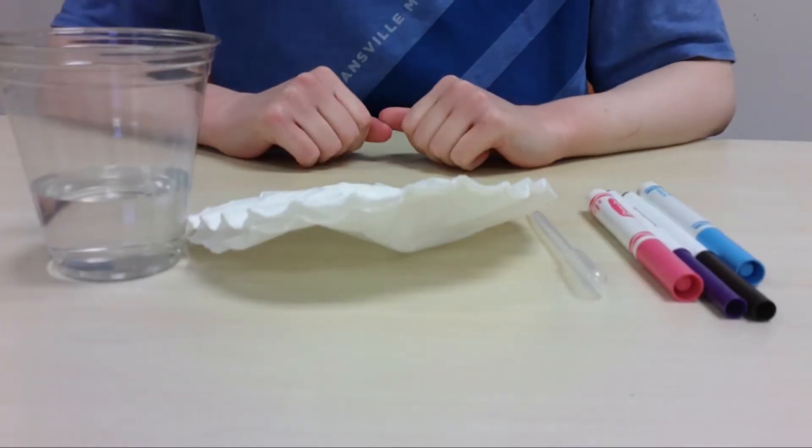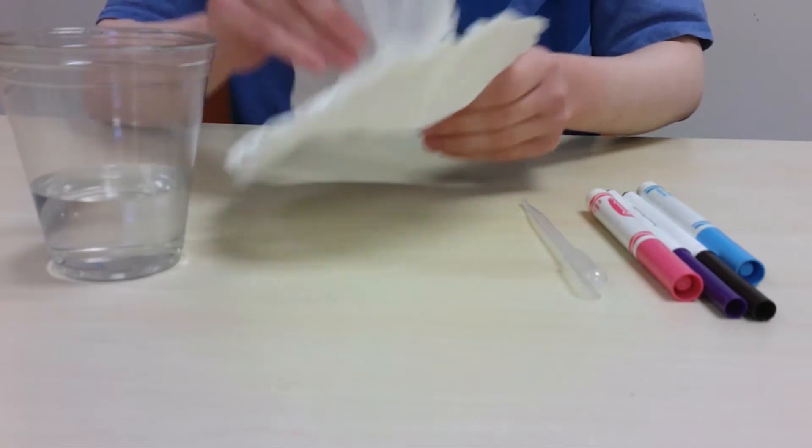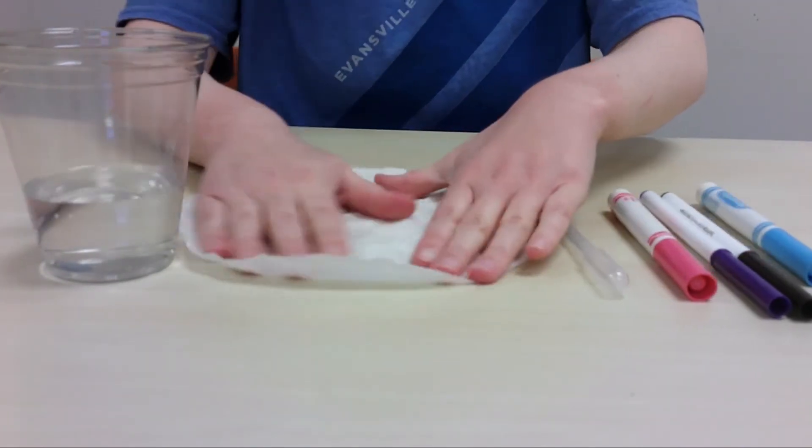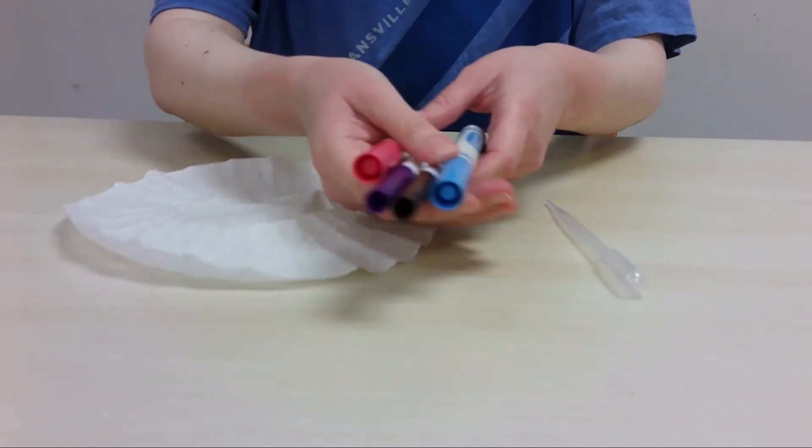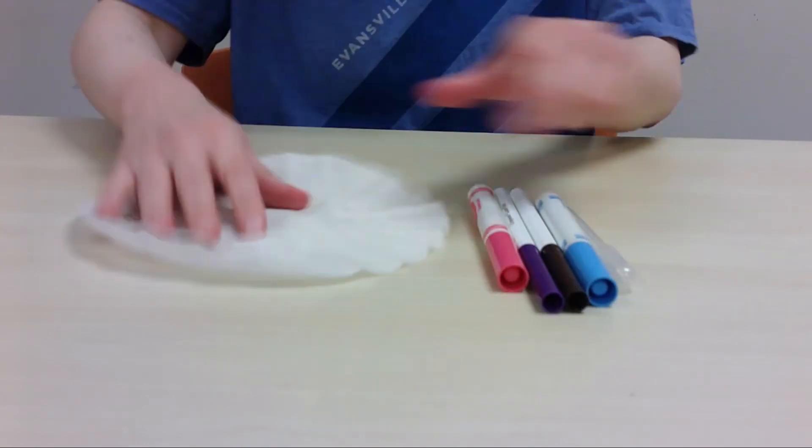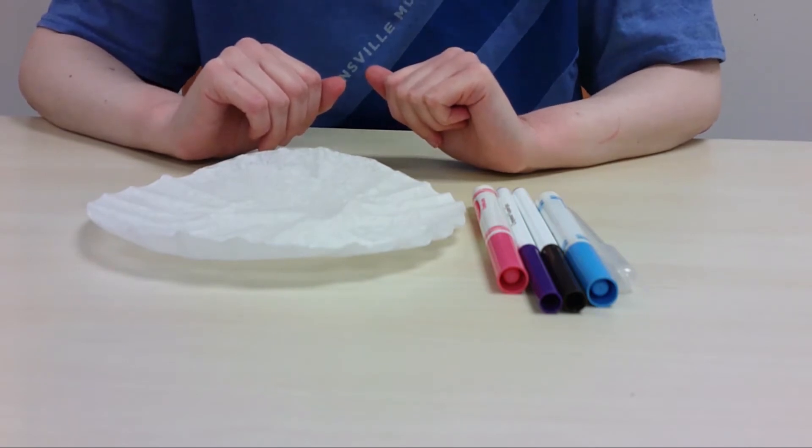Okay, let's get started. Once you have all your supplies together, we're going to make our very first monster. So you're going to want to take one coffee filter, set the other ones to the side, and pick some different colors of washable markers. I'm going to go with pink, blue, brown, and purple.